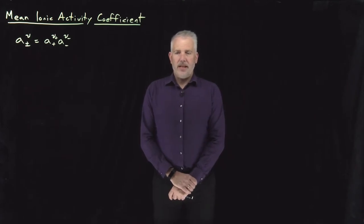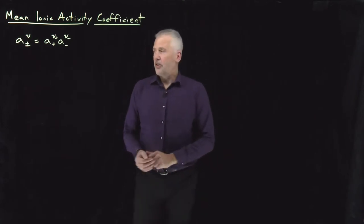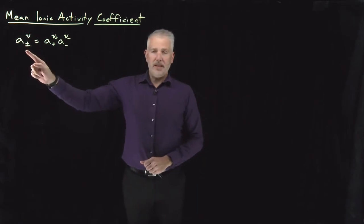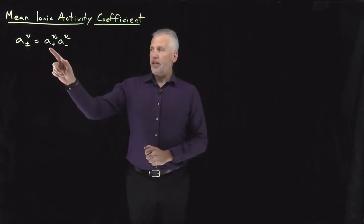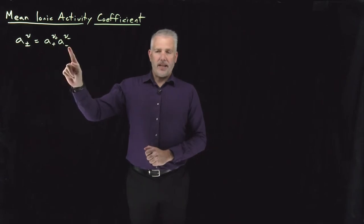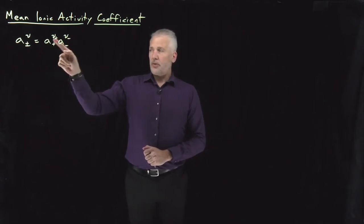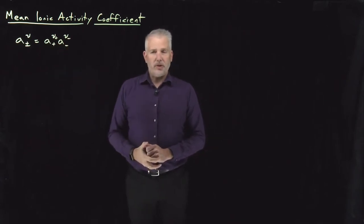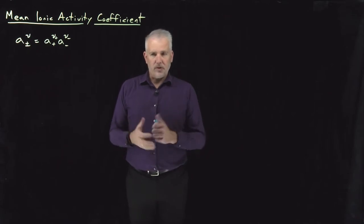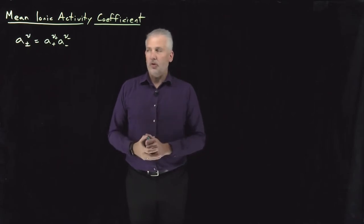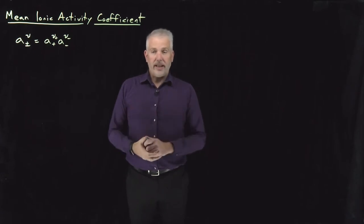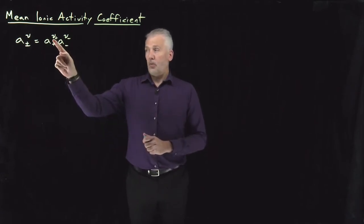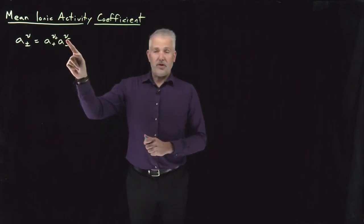We've talked about the activity of an electrolytic solution in terms of the combined or mean ionic activity, being a combination of the activities of the cation and the anion raised to the stoichiometric coefficients with which they come into solution. A one-to-one solute like sodium chloride would have these coefficients being one and one. A one-to-two salt like calcium chloride would have one for the cation and two for the chloride.